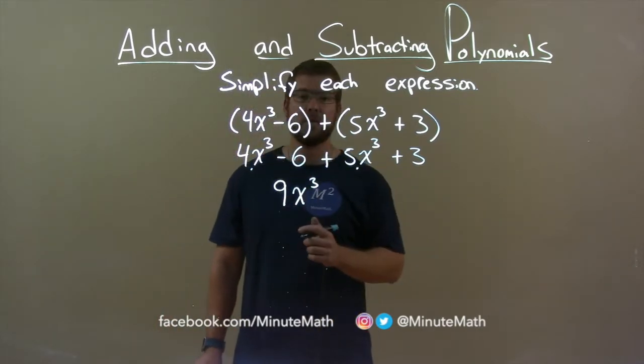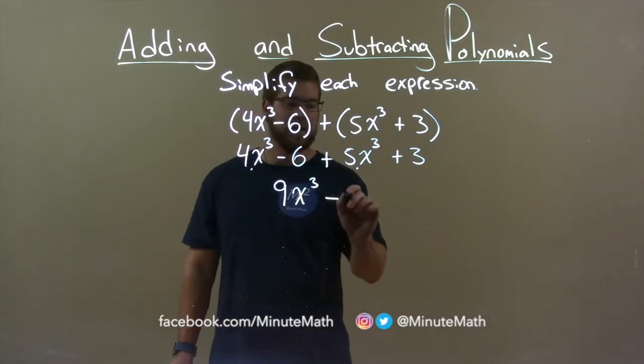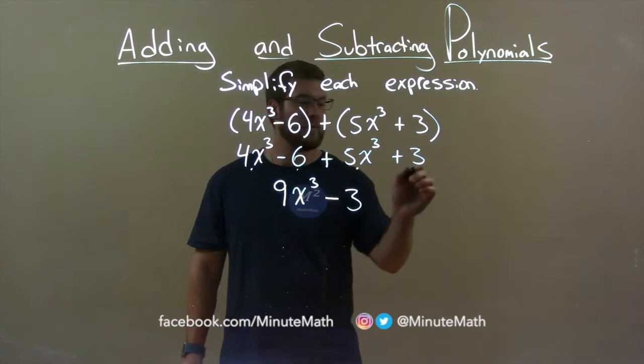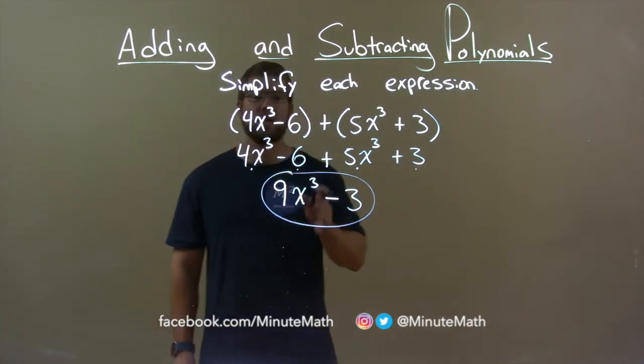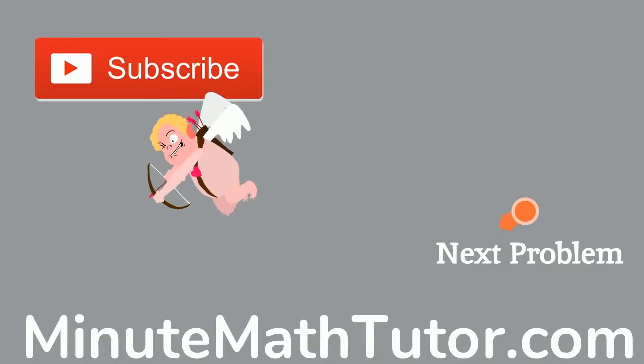Now we have minus 6 plus 3, which comes out to be minus 3 when we add them together. And there we have it. Our final answer: 9x to the third minus 3.